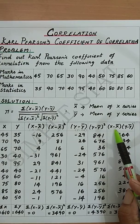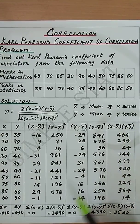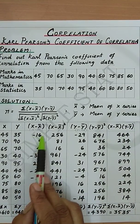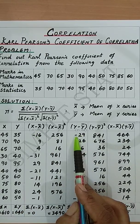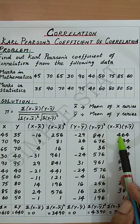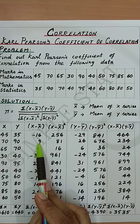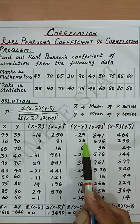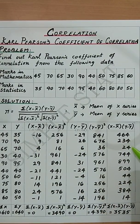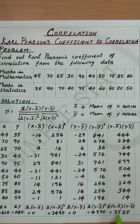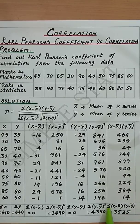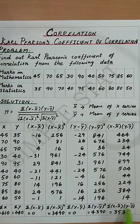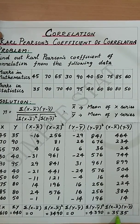Now proceed with x minus x bar into y minus y bar which is x minus x bar minus 16 into minus 29 which is 464. Next 9 into 26 which is 234. Complete all the calculations and find its total. We get summation (x minus x bar) into (y minus y bar) as 3535.